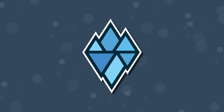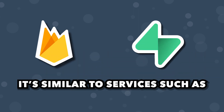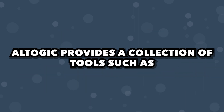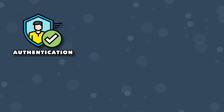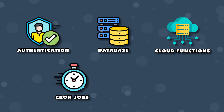Altagic is a powerful backend app development platform designed to create applications faster. It's similar to services such as Firebase and Supabase. Altagic provides a collection of tools such as authentication, database with real-time capabilities, cloud functions, cron jobs, and much more that we're easily able to plug into the front end of applications.